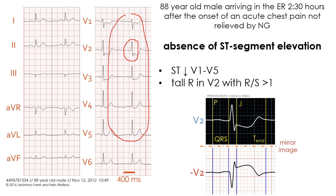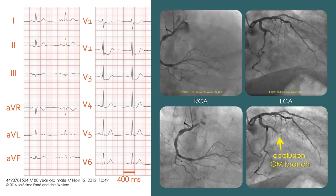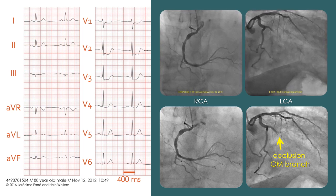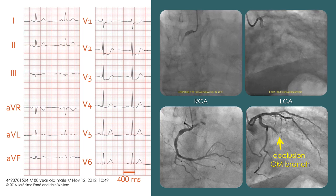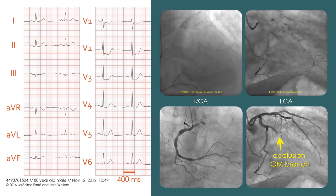Plus a tall and broad R-wave in lead V2 with an R-to-S ratio greater than one. This R-wave and the ST-segment depression in lead V2 are the mirror image of a wide and deep Q-wave and an ST-segment elevation in an opposite posterior lead. The patient was subjected to an urgent coronary angiography that demonstrated a right coronary artery system without severe stenosis and total occlusion of the obtuse marginal branch of the left circumflex coronary artery.